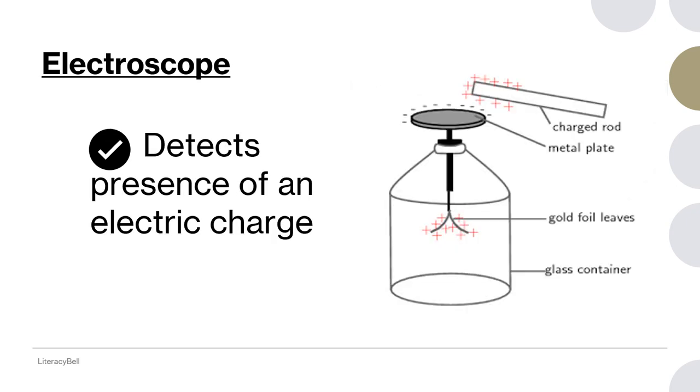Next device is electroscope. Most of you will be knowing about this. It is an early scientific instrument used to detect the presence of electric charge on a body. Electroscope is used to detect the presence of an electric charge on any body.